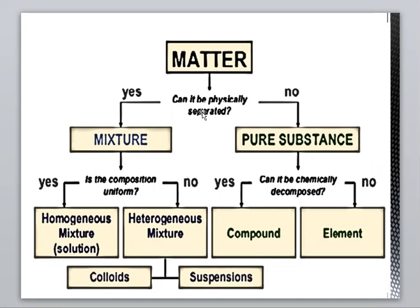If matter can be separated physically, it will be a mixture. If it cannot be separated physically, it will be a pure substance. Pure substances can be chemically decomposed — if yes, they become a compound; if no, they become an element. A mixture may have uniform composition — if yes, it becomes a homogeneous mixture or solution; if not, it will be a heterogeneous mixture.